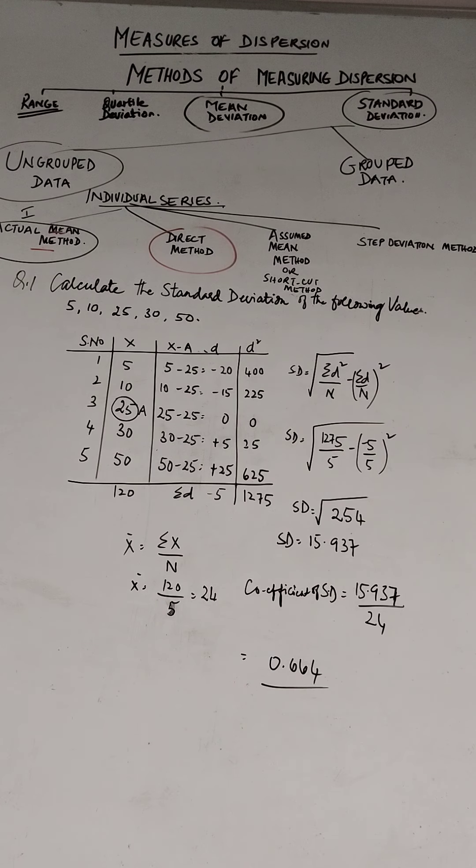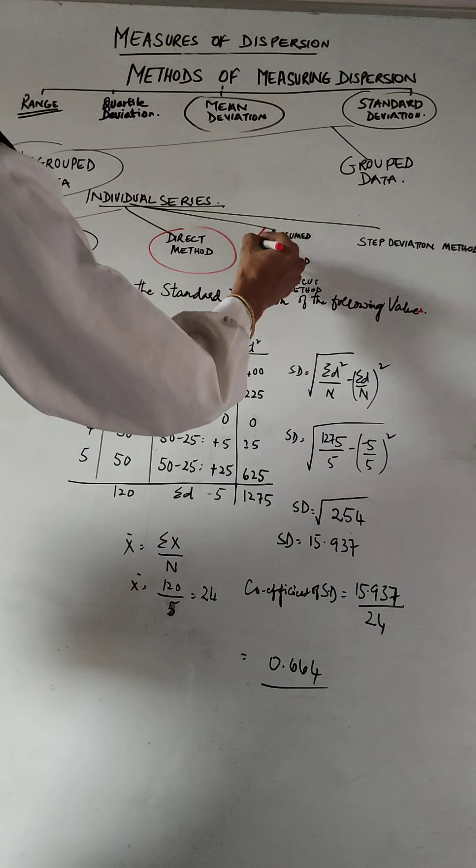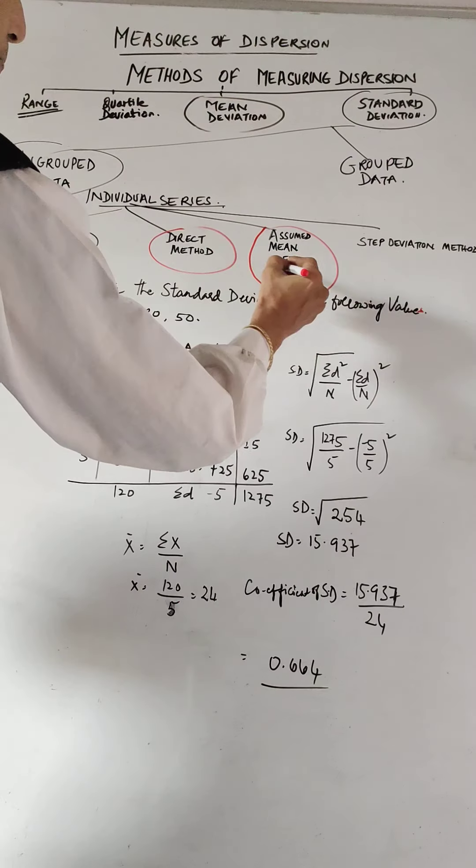This is also known as the assumed mean method, and sometimes it's also called a shortcut method.